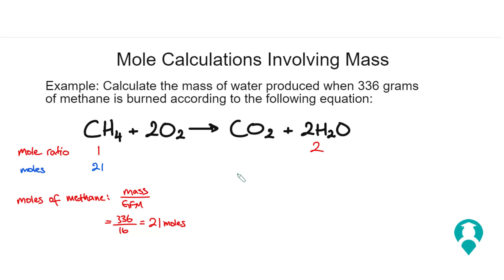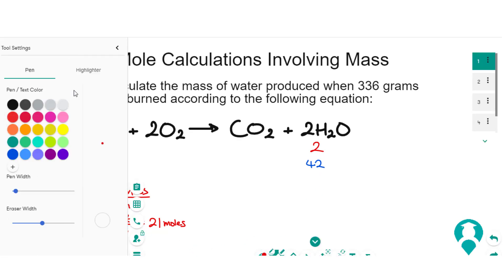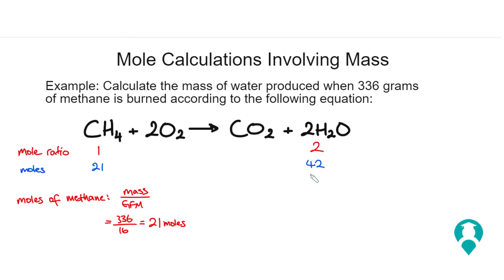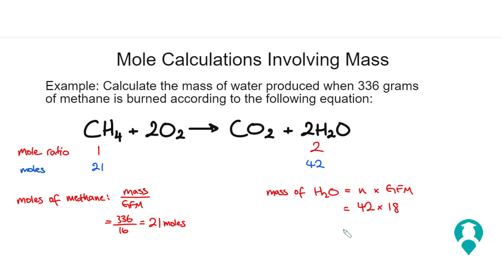So we have 21 moles of methane. Because it's a 1 to 2 mole ratio, we multiply by 2, which gives us 42 moles of water. Now we can calculate the mass of water produced. Mass of H₂O equals number of moles times gram formula mass, which is 42 times 18, and that gives us 756 grams.